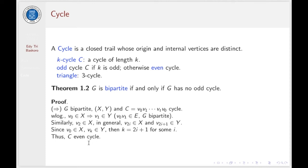We can conclude that C must be an even cycle. Therefore, if G is bipartite, then G contains only even cycles.